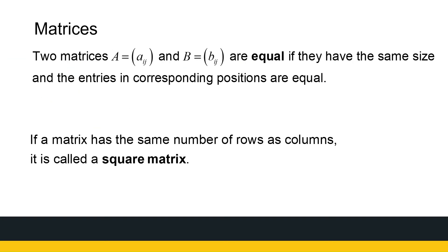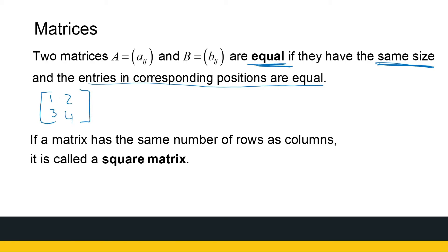The first property is the issue of equality. The definition of equality is very obvious, but we have to define what it means for two matrices to be equal, because this is a new thing we're defining. Two matrices are equal under two conditions. Firstly, they have to be the same size — that's the first thing you check. If they are not the same size, you don't look any further. For example, a two-by-two matrix and a two-by-three matrix with a column of zeros are not equal, because they're not the same size.